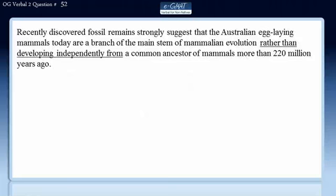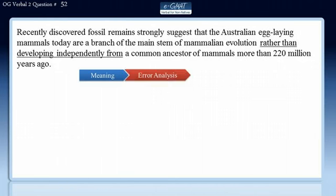Hello and welcome to e-GMAT. We will solve question number 52 of OG Verbal Second Edition by using e-GMAT's three-step process. In the first step we will understand the meaning of the sentence, in the second we will evaluate the errors in the sentence, and finally we will review all the answer choices to get to the correct answer.